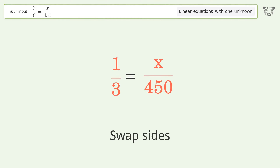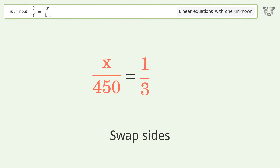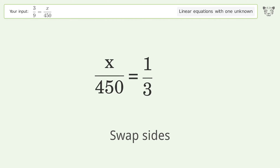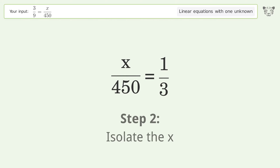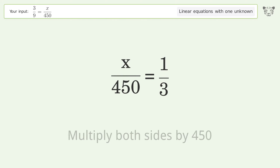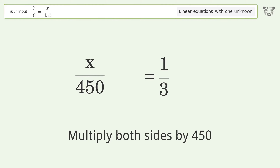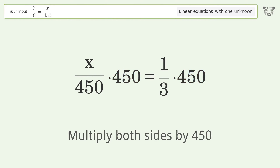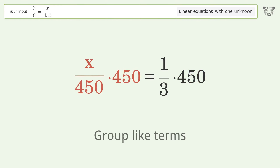Swap sides. Isolate the x — multiply both sides by 450. Group like terms.